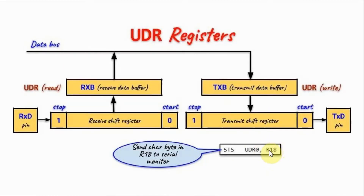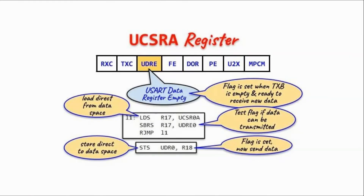As an example, if we have a byte in register R18 that we want to transmit to a serial peripheral, we use the STS instruction — store direct to data space — with the UDR register as the destination. But before issuing this instruction, we must ensure the TXB register is empty, and once it is, we can transmit the byte.